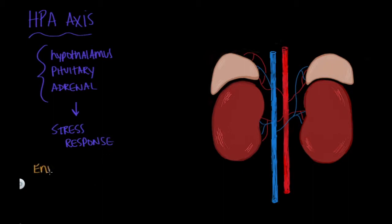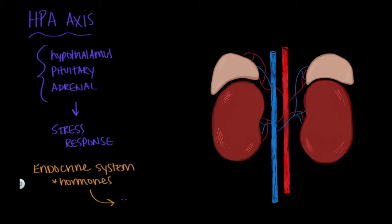As a quick review, remember that the endocrine system is the entire set of glands in the body that secrete chemical messengers called hormones into the bloodstream so that they can communicate with target organs that are some distance away. Therefore, the HPA axis is a series of events that occur when the body is faced with a stressor.